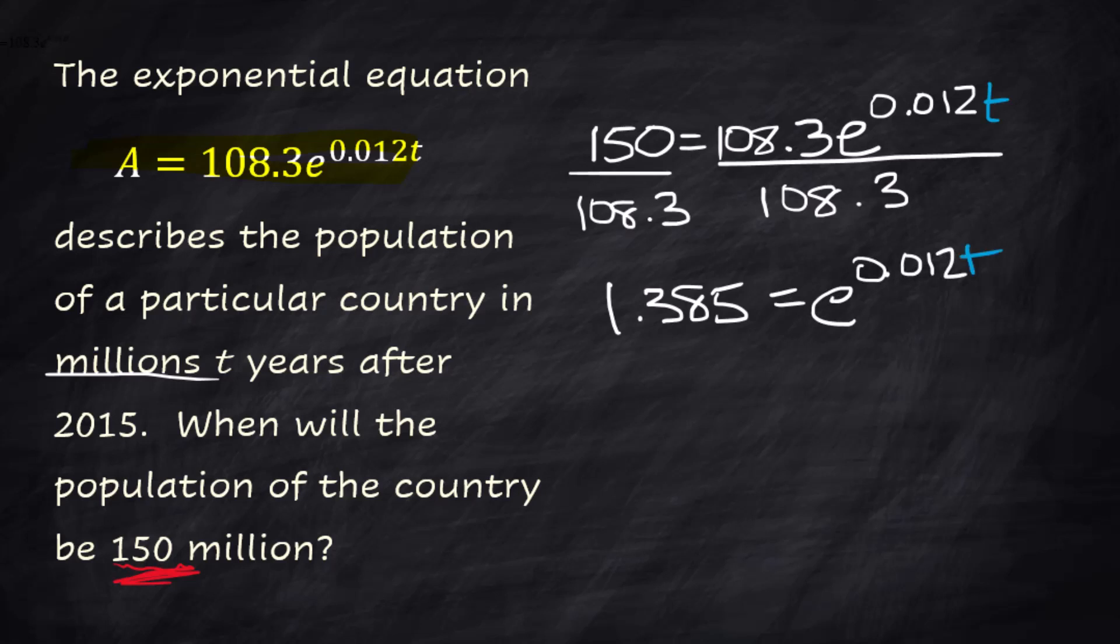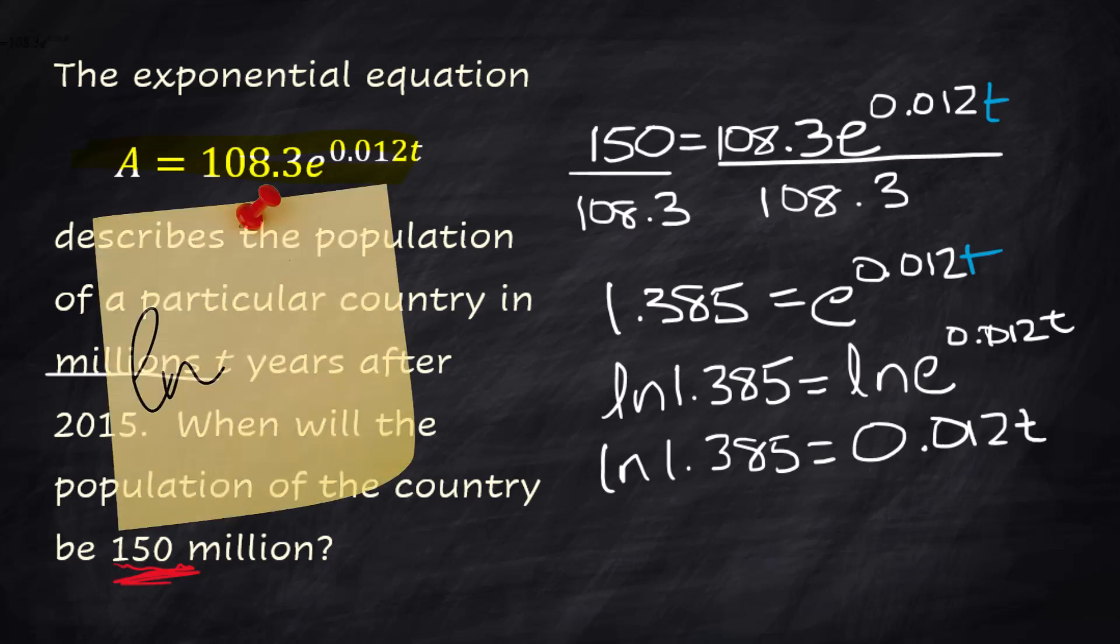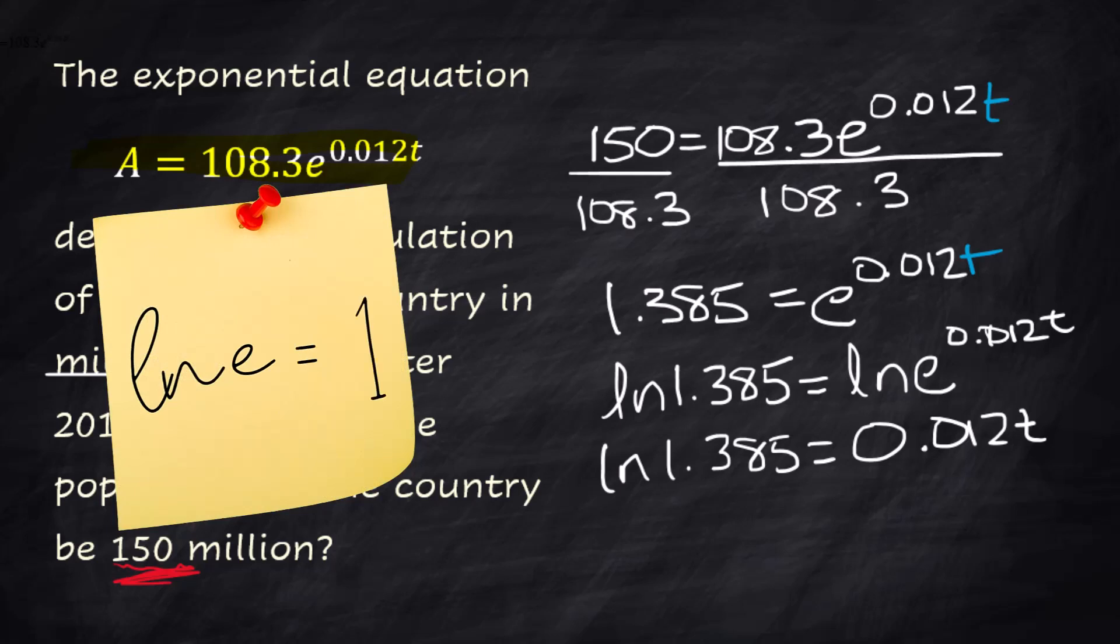All right now to solve for an exponential equation we're gonna do the natural log on both sides because we have an e here. So the natural log of 1.385 equals the natural log of e to that exponent. The exponent comes down. Natural log 1.385 equals 0.012t times the natural log of e which we know is 1. So I'm just gonna leave that off.